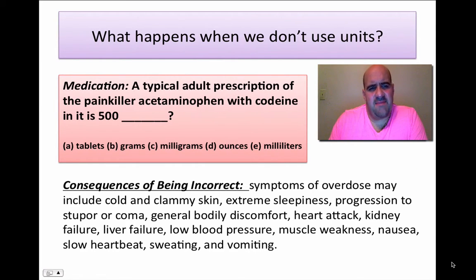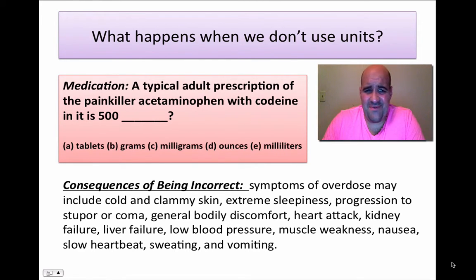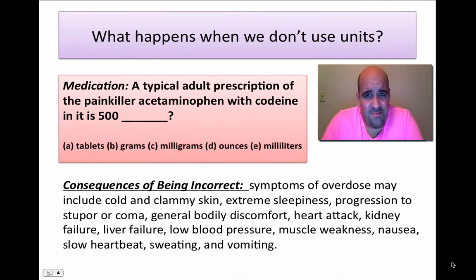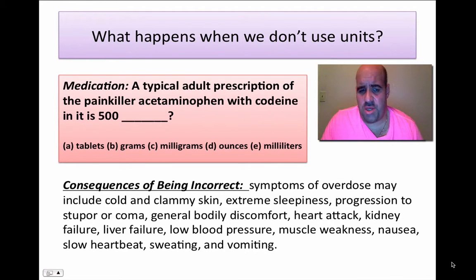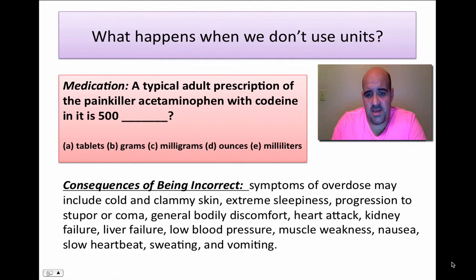Here's an example of what happens when we don't use units with medication. A typical adult prescription of the painkiller acetaminophen with codeine is 500 blank. Should you take 500 tablets? That doesn't seem right. 500 grams comes out to about a pound of Tylenol — we don't want that. 500 ounces would be about 31 pounds. Symptoms of overdose may include cold or clammy skin, extreme sleepiness, progression to stupor or coma, heart attack, kidney failure, liver failure, low blood pressure, muscle weakness, nausea, slow heartbeat, sweating, and vomiting.